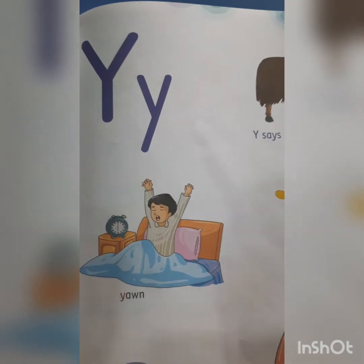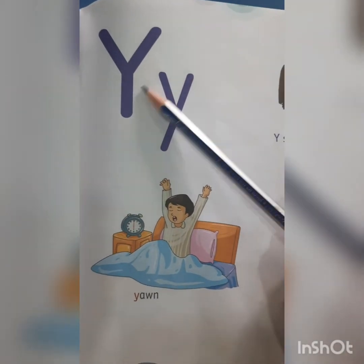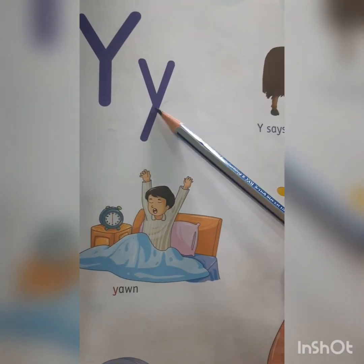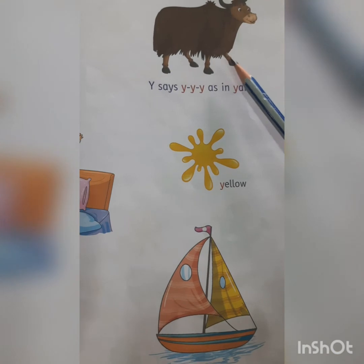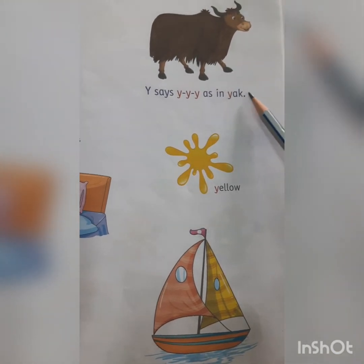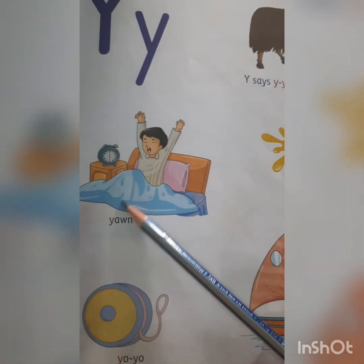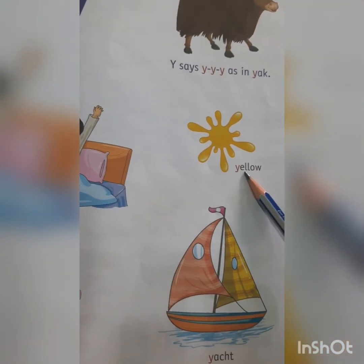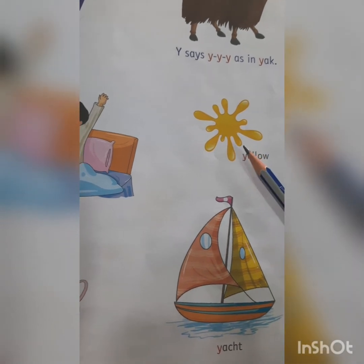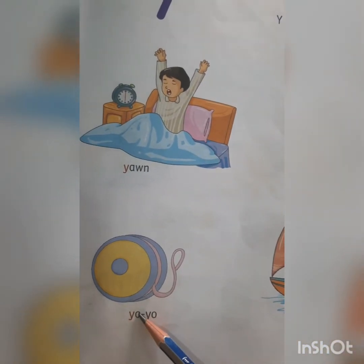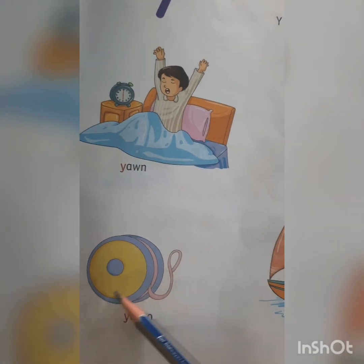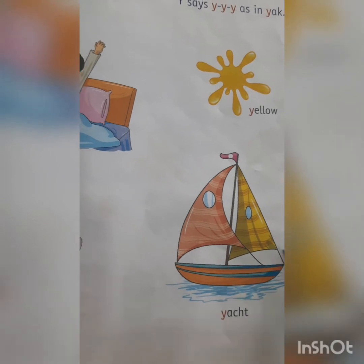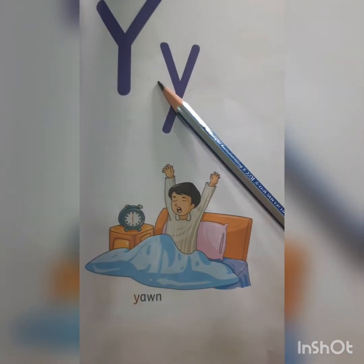Which letter comes after X children? This is letter Y. Capital Y and small y. What is the sound of letter Y? It's 'Y' in yak. Y-A-K. Yak. Y-A-W-N. Yawn. Y-E-L-L-O-W. Yellow. Y-O-Y-O. Yo-yo. Y-A-C-H-T. Yacht.